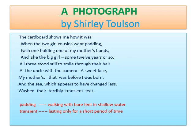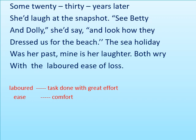In this stanza, the poet very beautifully explained the transient or ever-changing nature of human beings. Now let us read the second stanza: 'Some twenty, thirty years later, she'd laugh at the snapshot. See Betty and Dolly, she'd sing, and look how they dressed up for the beach. The sea holiday was a past. Mine is a laughter. Both wary with the laboured ease of loss.'